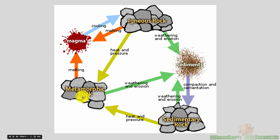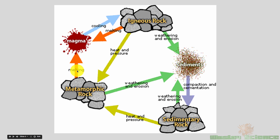A rock could also experience heat and pressure right from being an igneous rock, become a metamorphic rock, and then get weathered and eroded into sediment. There are many directions and possibilities for rocks to go throughout the 4.6 billion years that Earth has existed.